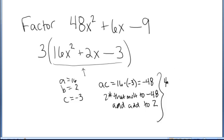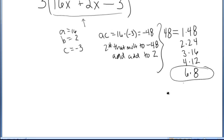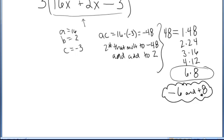I need to find two numbers that multiply to negative 48 and at the same time add up to the middle term 2. I'm going to take 48 and think of all the ways I can multiply to 48 with positive integers: 1 times 48, 2 times 24, 3 times 16, 4 times 12, 6 times 8. Then I try to find the numbers that multiply to negative 48 and add up to 2. If I make it negative 6 and positive 8, those numbers multiply to negative 48 and add up to positive 2.